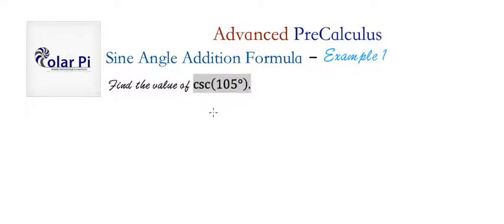In this first practical example, we have to find the cosecant of 105. Now remember, cosecant of 105 is the same as 1 over sine of 105, and this is where the sine angle addition formula would come in handy in figuring out sine of 105.